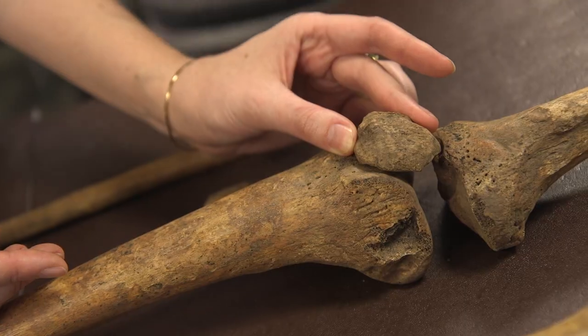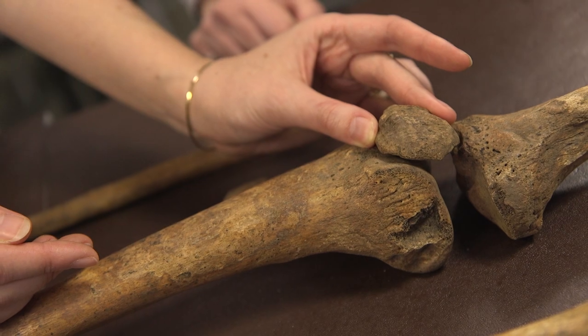And then there are sesamoid bones which are slightly different. They're defined by the fact they sit within ligaments and tendons. The most well-known sesamoid bone is actually the patella, the kneecap. So we can classify bones by their shape.